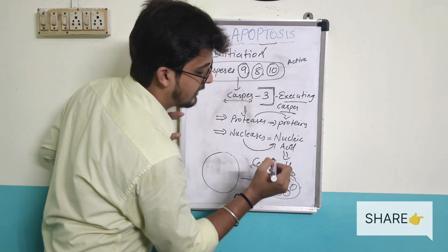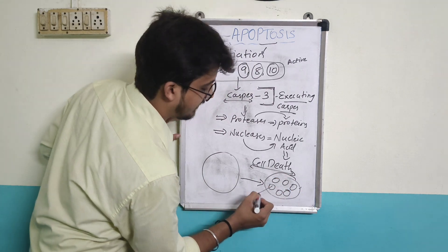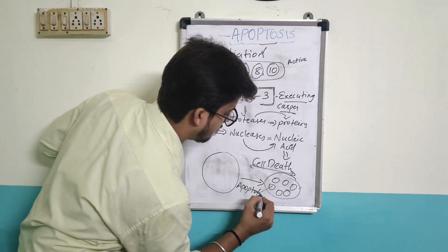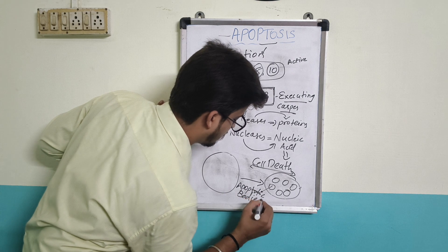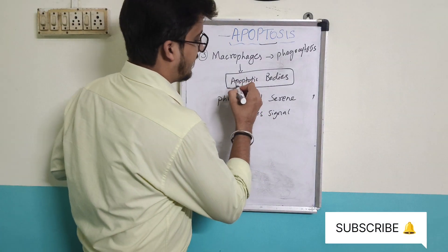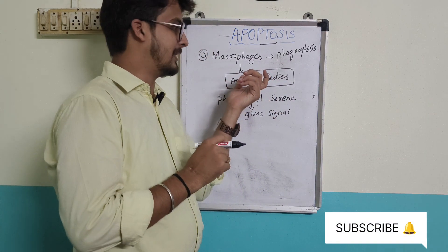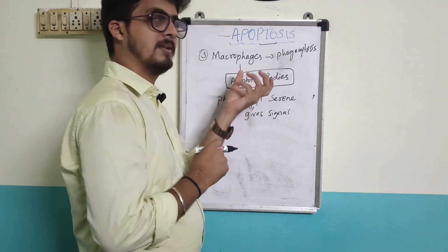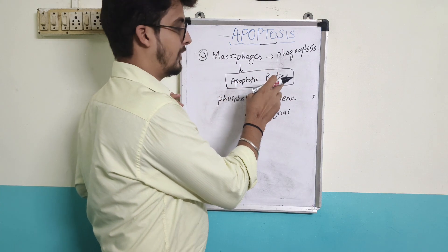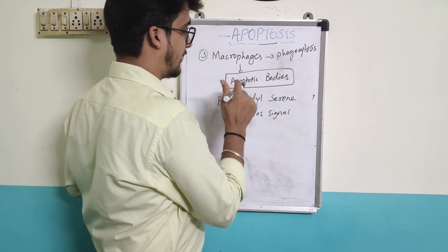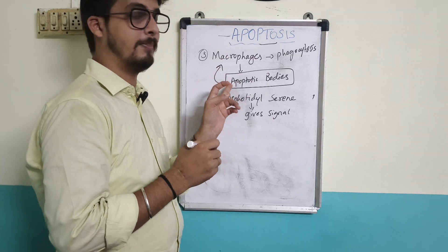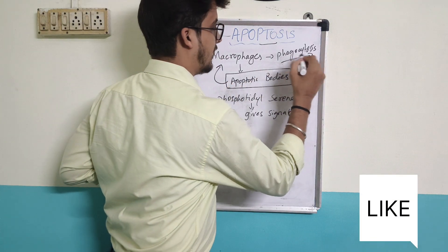After protein and nucleic acid breakdown, the cell undergoes death. Small fragments form from the internal contents of the cell, creating structures called apoptotic bodies. These apoptotic bodies are cell death fragments that need to be cleared from the body. Macrophages help remove them by the process of phagocytosis, which is the third step of apoptosis.